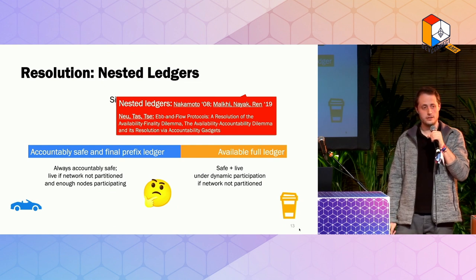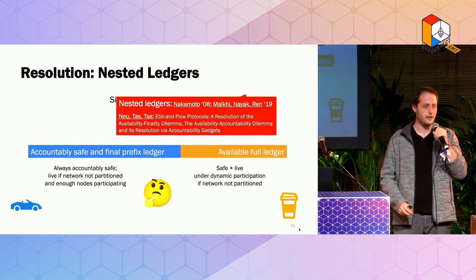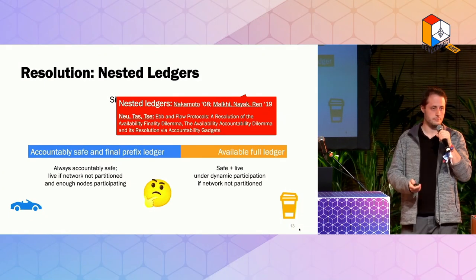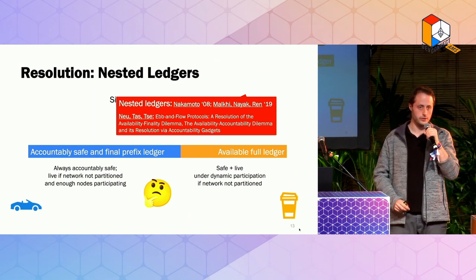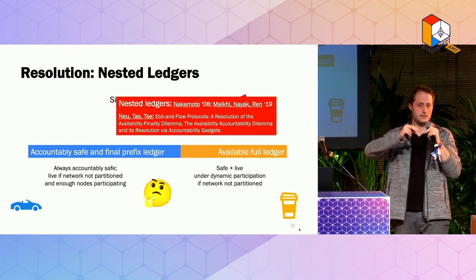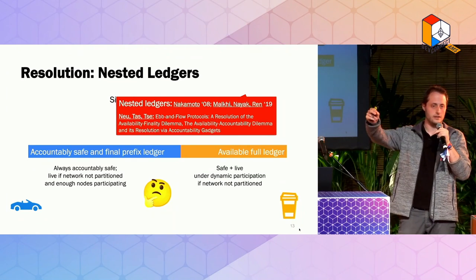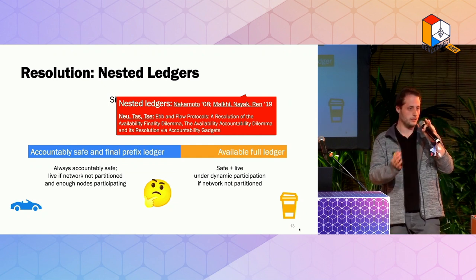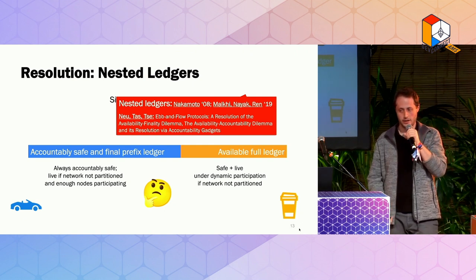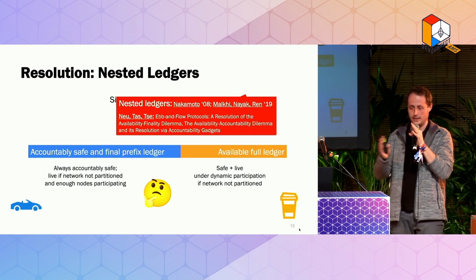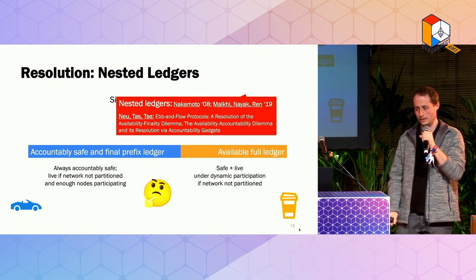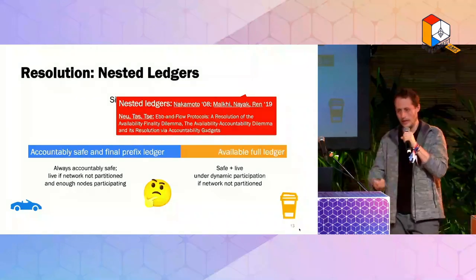Given these two ledgers, our two vendors can pick the part of the ledger important to them. The car vendor picks the prefix — slightly longer settlement time but stronger safety guarantee. The coffee vendor picks the full ledger — it settles faster but is a little bit less safe. This idea of nested ledgers isn't entirely new. If you go back to Nakamoto's white paper, for different values of k in the k-deep confirmation rule, you also obtain these nested ledgers. A client running with higher k gets a ledger that is a prefix of any client running with smaller k. So this idea of nesting ledgers to achieve different trade-offs of latency and safety was already there before.